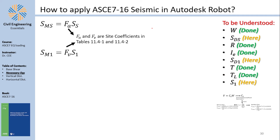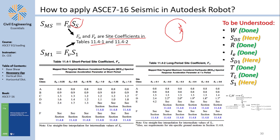FA and FV are site coefficients from tables 11.4-1 and 11.4-2. They modify the mapped values based on soil and site conditions — because even within the same city, different soil profiles can significantly affect seismic response. To use these tables, you need both the mapped values (SS, S1) and the site class.